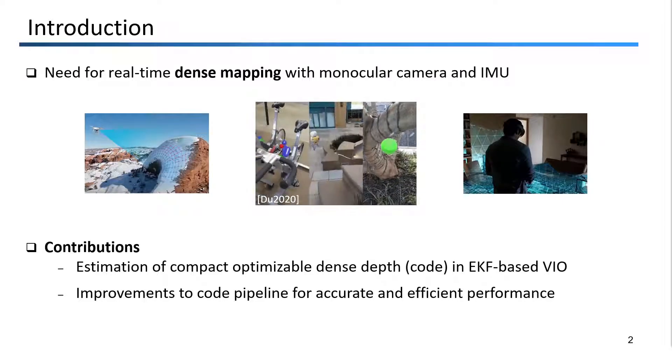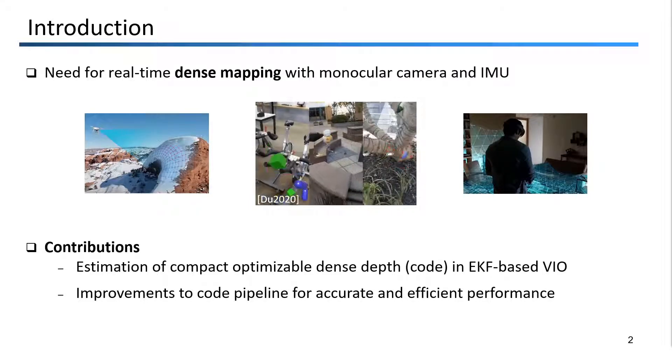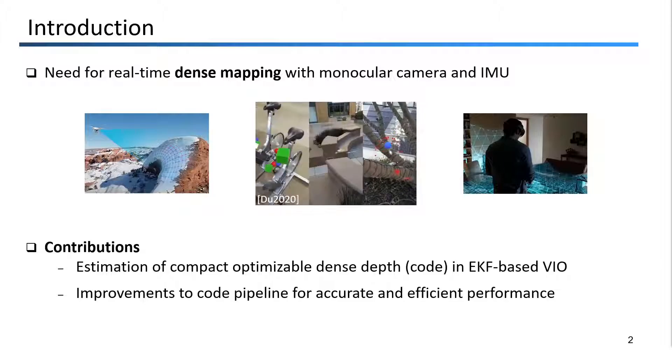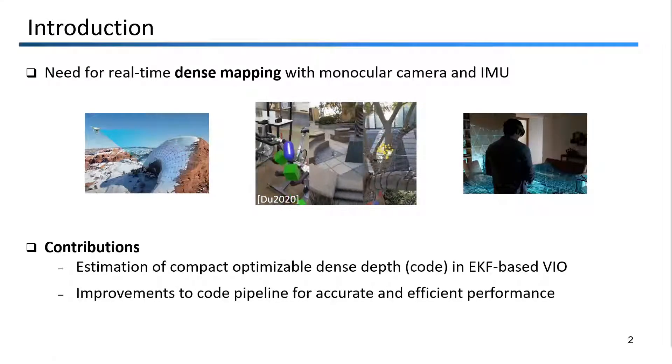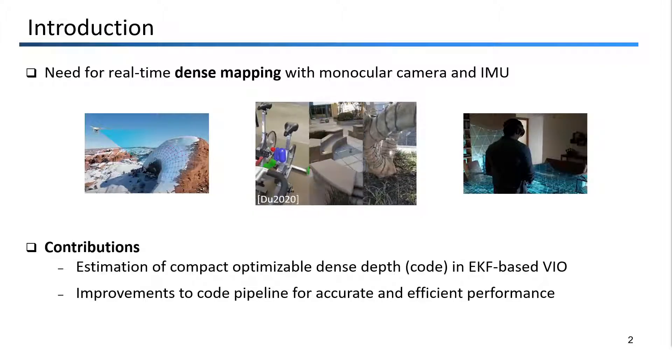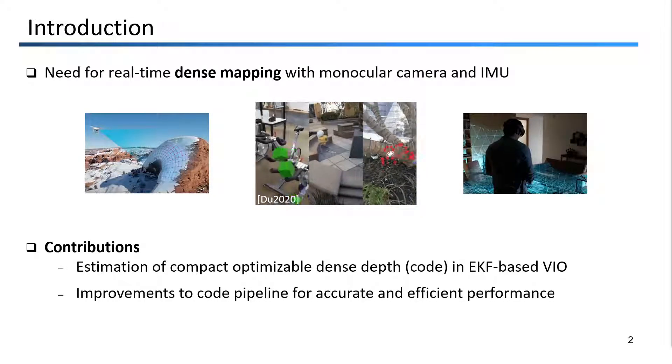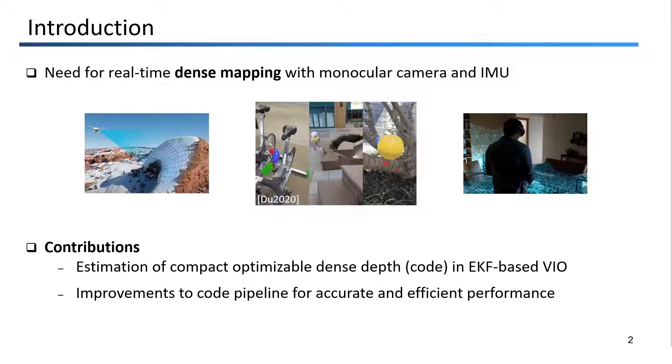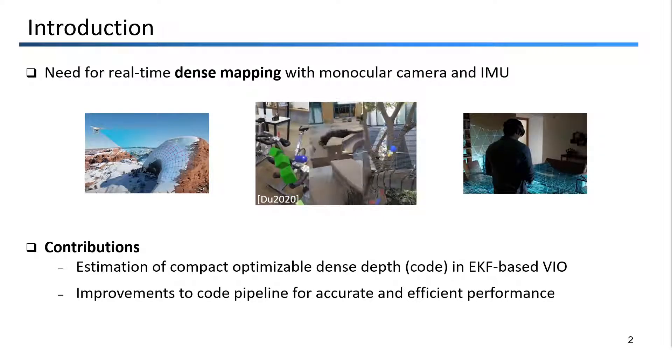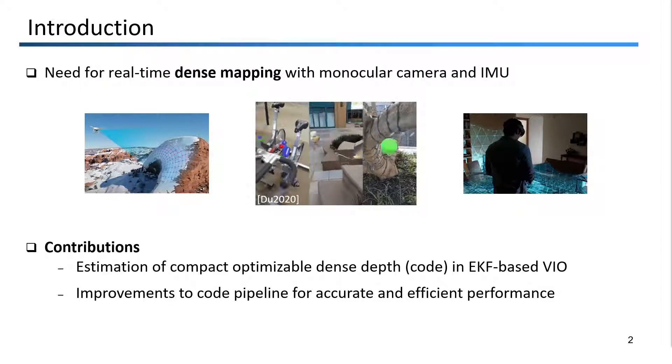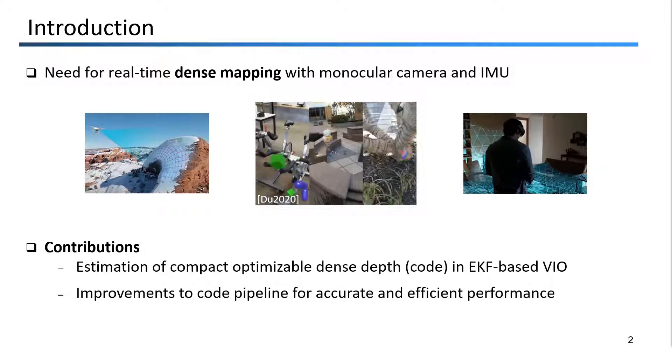The summary of our main contributions are as follows: We present for the first time a formulation for the estimation of Compact Optimizable Dense Depth, or CODES, in an EKF-based VIO framework. We also provide many improvements to the code pipeline that enables accurate and real-time performance. Now, you may be wondering what exactly CODES means. I will explain this on the next slide.